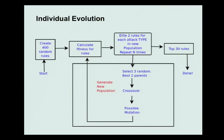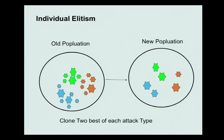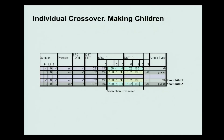This is an overall diagram. If you look at this diagram and don't understand it, I'm going to go through the details. It's basically a process that repeats over and over. We start with a population and then create a new population. Because we're trying to evolve rules to identify multiple types of attacks, I chose to take the best two rules of each attack type and copy them into the next population. So if we have 400 rules and six types of attacks, we'll have 12 best rules copied over.